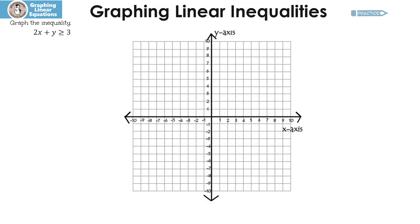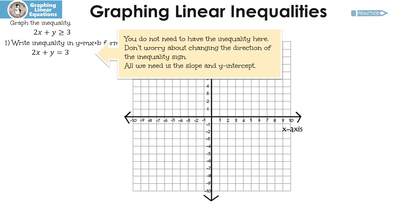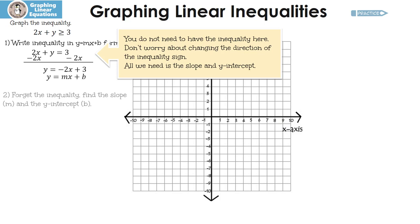Here's another one for you to practice. Pause the video, graph the inequality, and then press play to check. I'm going to give you a little hint: you're going to have to find y equals mx plus b. Alright, let's see how you did. The first thing is we need to write the inequality in y equals mx plus b form. We don't care about the inequality right now, so I'll put an equal sign there — it just helps our brains. All we need to do is find the slope and the y-intercept. To get y by itself, I'm going to subtract 2x from both sides, which gives me y equals negative 2x plus 3 — we have y equals mx plus b. The slope is negative 2 and the y-intercept is 3.